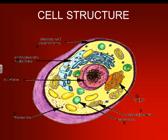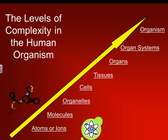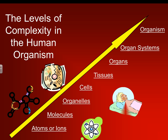Here is our basic cell structure, and we will go into depth in the class on this. So the levels of complexity in the human organism, starting from the very bottom: we have our atoms or ions — those make the very smallest form of life. Next we have our molecules; atoms form molecules, and the molecules form organelles, which are located within the cells.